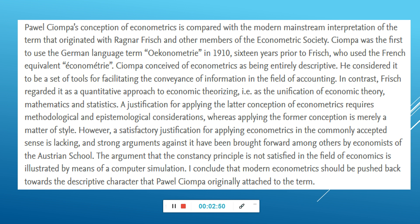Siompa conceived of econometrics as being entirely descriptive. He considered it to be a set of tools for facilitating the conveyance of information in the fields of counting. In contrast, Frisch regarded it as a quantitative approach to economic theorizing — that is, as the unification of economic theory, mathematics, and statistics. A justification for applying the later conception of economics requires methodological and epistemological consideration, whereas applying the former conception is merely a matter of style.